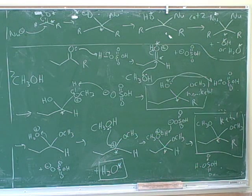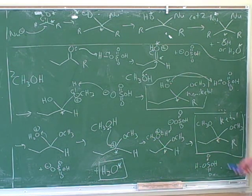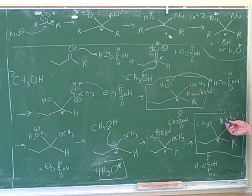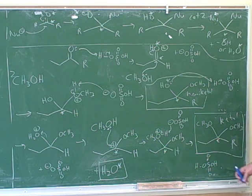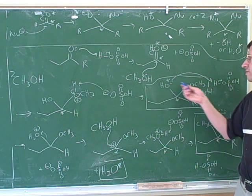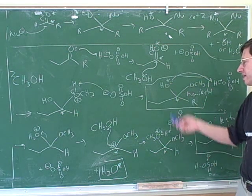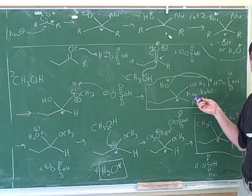So those are those four names: acetal, ketal, and hemiacetal and hemi-ketal. The final product here is either a full acetal or a full ketal, depending on whether you started with an aldehyde or a ketone. But the product halfway through, when only the first alcohol has attacked and that carbonyl oxygen is still around, is a hemi-ketal or a hemiacetal.